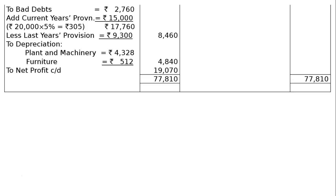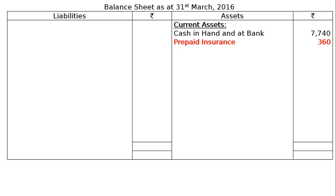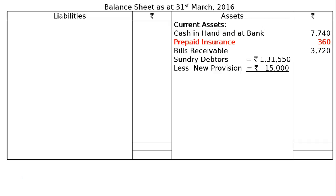Now prepare the balance sheet as at 31st March 2016, starting from the asset side. Current assets: cash in hand and at bank Rs. 7,740; prepaid insurance Rs. 360; bills receivable Rs. 3,720; sundry debtors Rs. 1,31,550 less new provision Rs. 15,000, giving Rs. 1,16,550 in the final column; closing stock Rs. 1,27,410, being an adjustment shown twice.